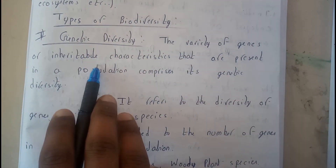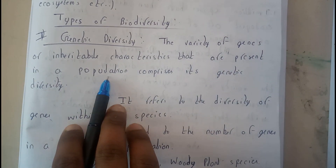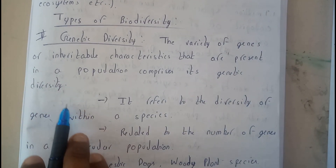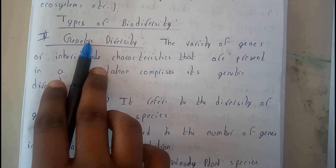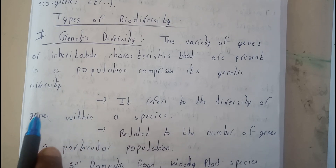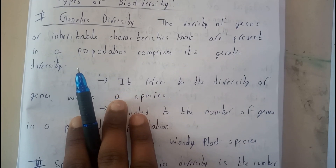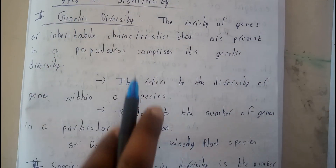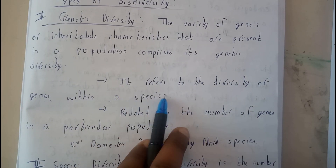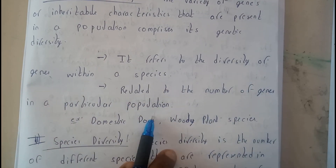The variety of genes or inheritable characteristics that are present in the population comprises its genetic diversity. Genetics means those properties which are inherited from our parents — they travel through genes. So genetic diversity refers to the diversity of genes within a species. It is also related to the number of genes in a particular population.